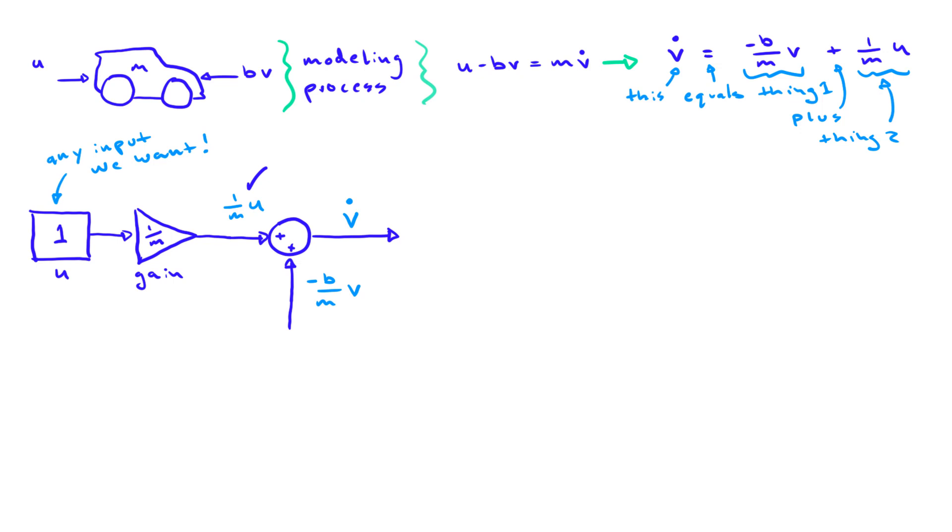Looking at the output of the summing junction, we notice that we have v dot. Mathematically, the way to obtain v from v dot is to integrate the v dot signal. It sounds like a daunting task and it would be to do by hand, but this is where the power of Simulink really starts to show. We know of a block that does integration. It's called the integrator block and we can use it at will. Thus the output of this integrator block is indeed the signal v, which represents the velocity of the vehicle.